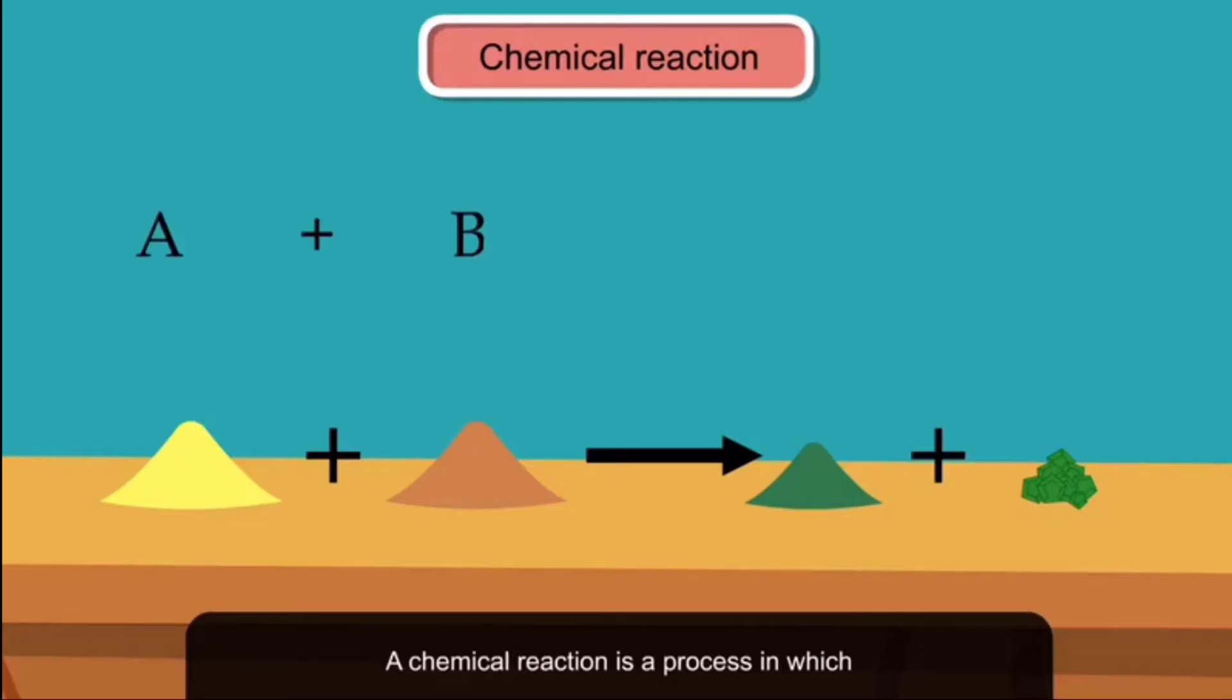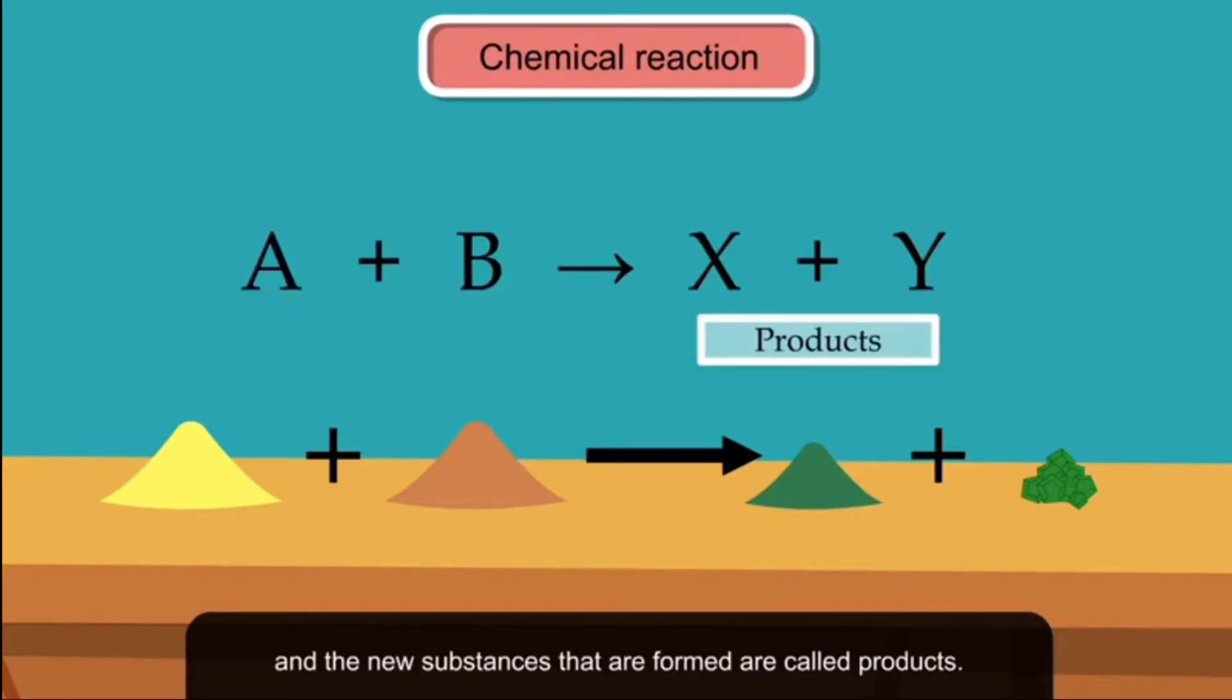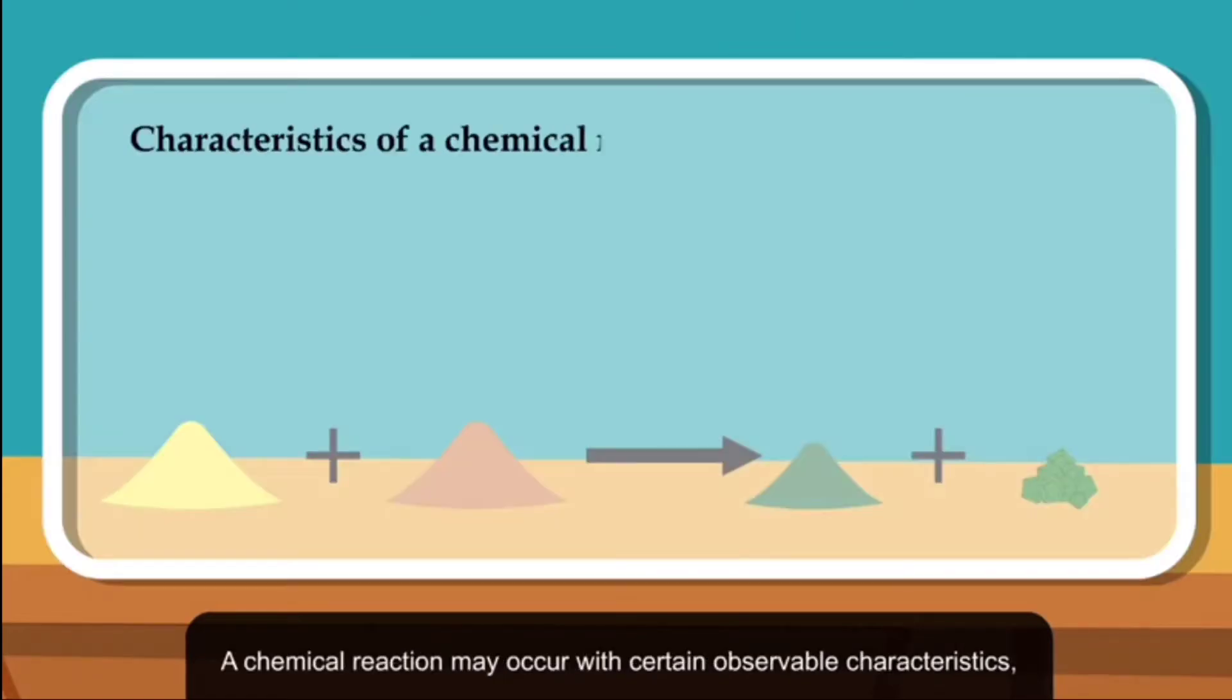A chemical reaction is a process in which one or more substances get converted into one or more different substances. The substances undergoing change are called reactants and the new substances that are formed are called products.